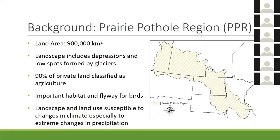90% of the private land in this area is used for some form of agriculture — be it row crops like corn and soybeans, or grazing pasture land and feedlots for cattle. In addition to that, it's also an important habitat and flyway for birds, including Canadian geese.